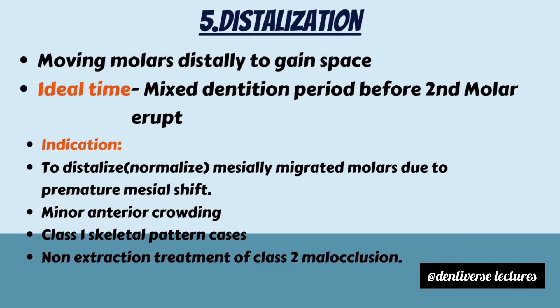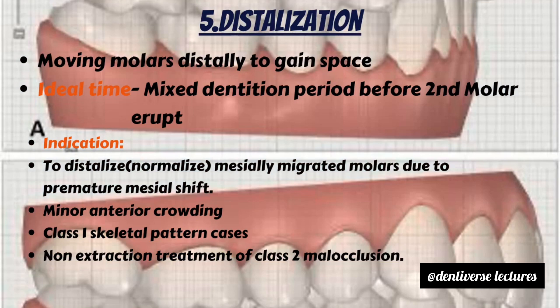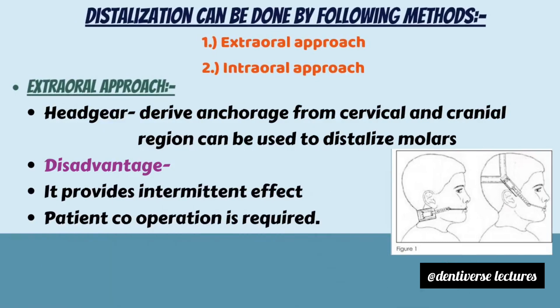Indications for molar distalization are: to distalize or normalize mesially migrated molars due to premature mesial shift or early loss of deciduous molars, minor anterior crowding, Class I skeletal pattern, and as a non-extraction treatment option for Class II malocclusion. Distalization can be done by extraoral approach and intraoral approach. For the extraoral approach, headgears are used, which derive anchorage from cervical and cranial regions.